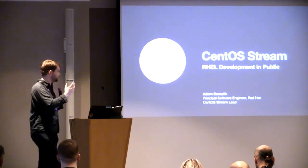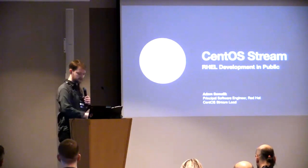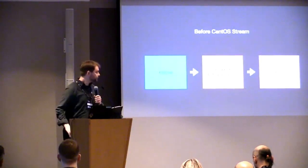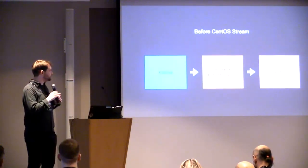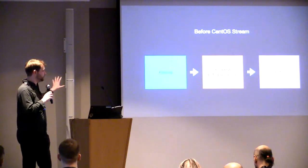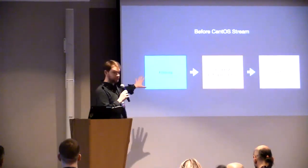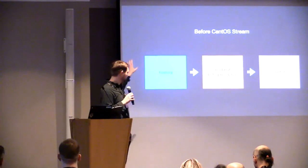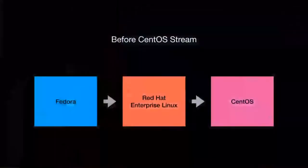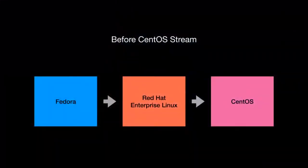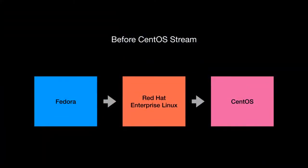This is the state before CentOS Stream. Everything started in Fedora — they keep innovating, doing package rebases and all sorts of design. Once in a while Red Hat takes a portion of it and it goes through a very complex process to become RHEL.